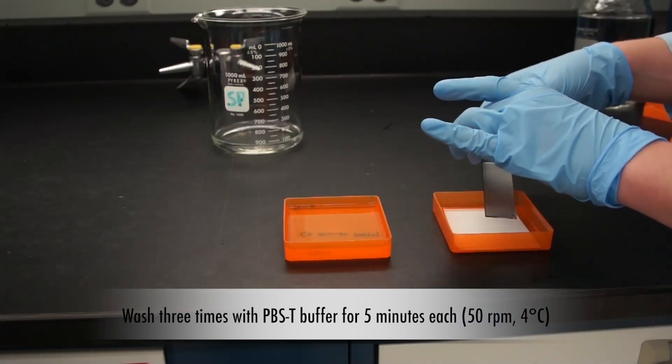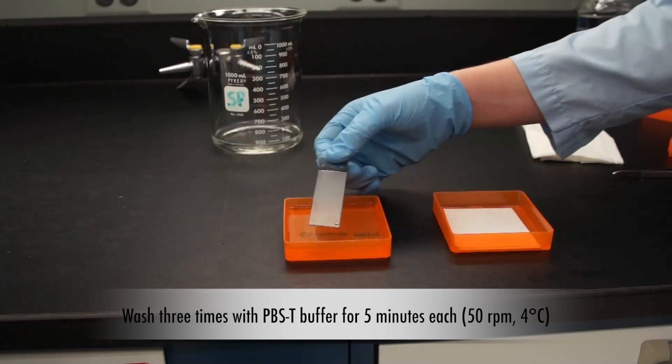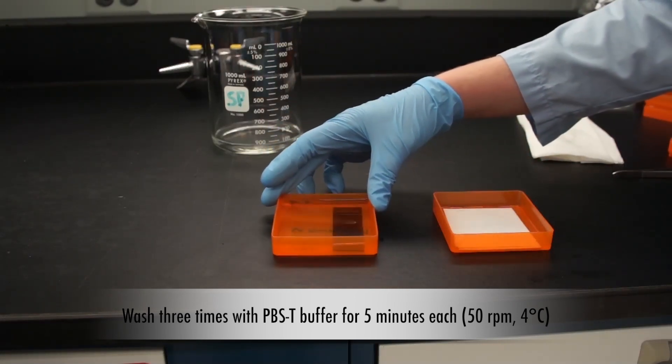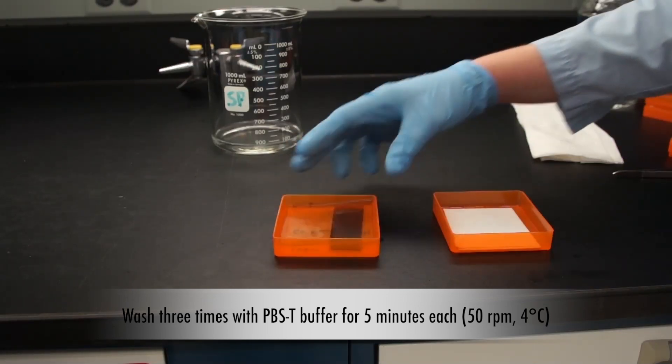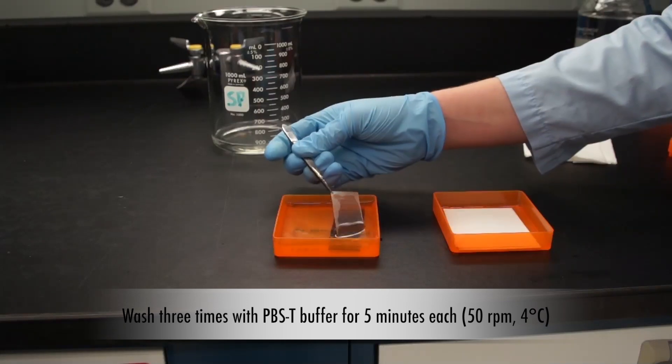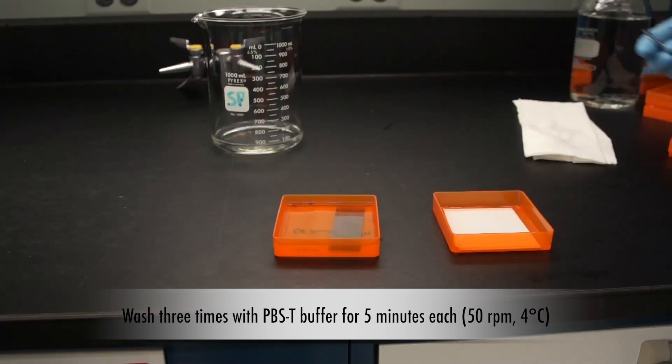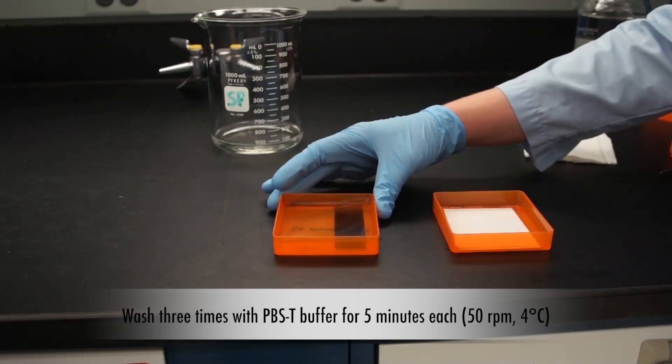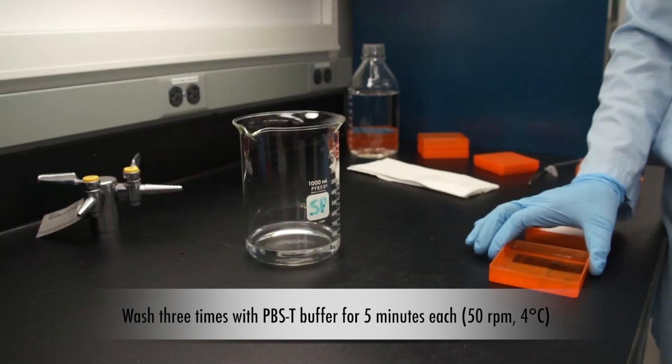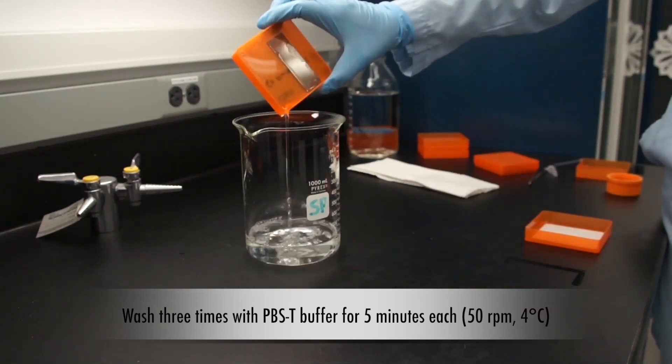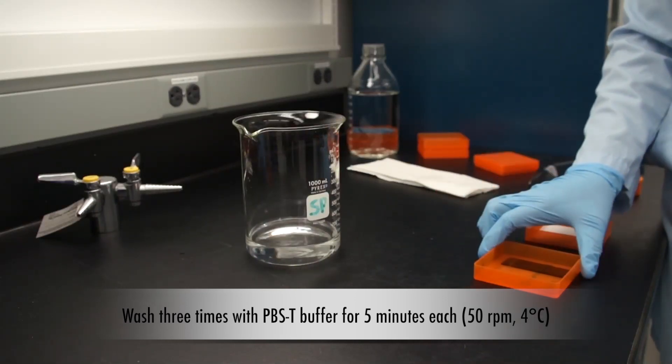Gently drop the slide into PBST buffer to wash the probing buffer off the slide. Shake the slide for 5 minutes at 4 degrees Celsius. Drain the buffer from the chamber and wash twice more with PBST.